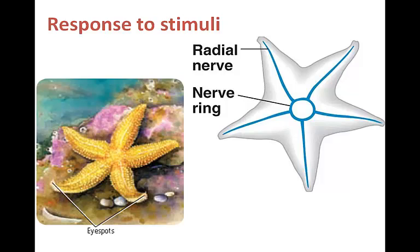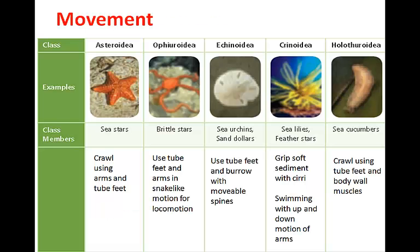Echinoderms have both sensory and motor neurons with varying degrees of complexity. In general, a nerve ring surrounds the mouth with branching nerve cords connecting to other body parts. Sensory neurons respond to touch, chemicals dissolved in water, water currents, and light. The tips of the arms of sea stars have eye spot clusters of light-sensitive cells. Many echinoderms also sense the direction of gravity.